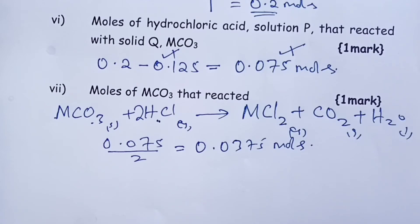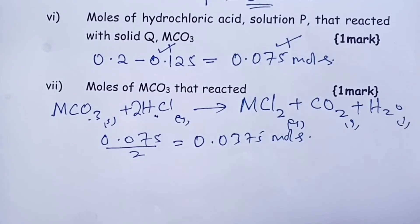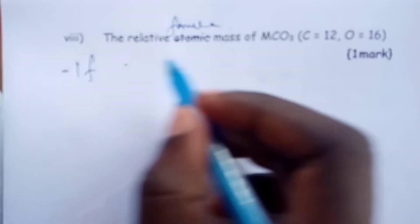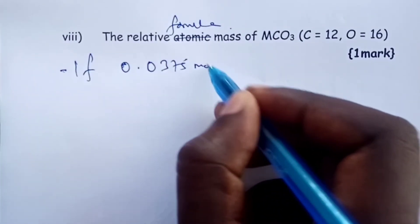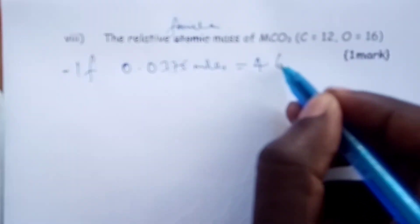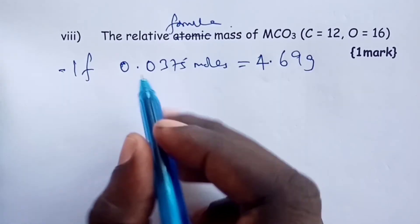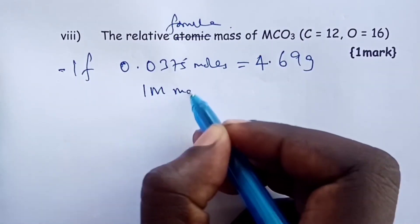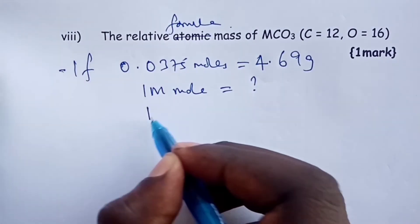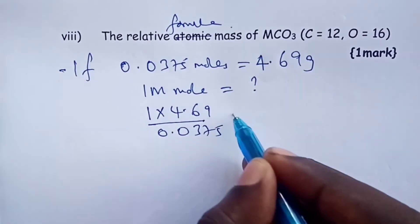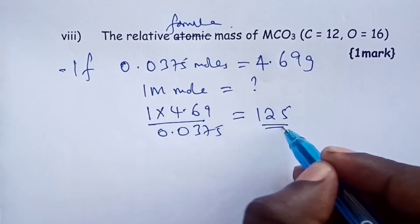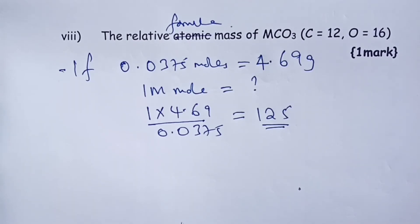Let's finally look at the last question, which is asking us the relative formula mass of M carbonate. And from here, we shall then be able to get the relative atomic mass of metal M. The number of moles we've gotten is 0.0375. This one is the equivalent of 4.69 grams that we used initially. So, to get the relative formula mass, we need to get the mass of 1 mole. And this we get by multiplying 1 by 4.69 and then we divide by 0.0375. This gives us 125. Remember, relative formula mass should not have any unit.